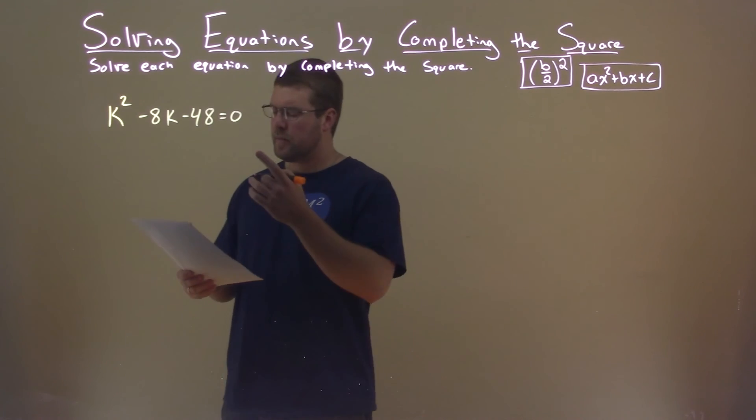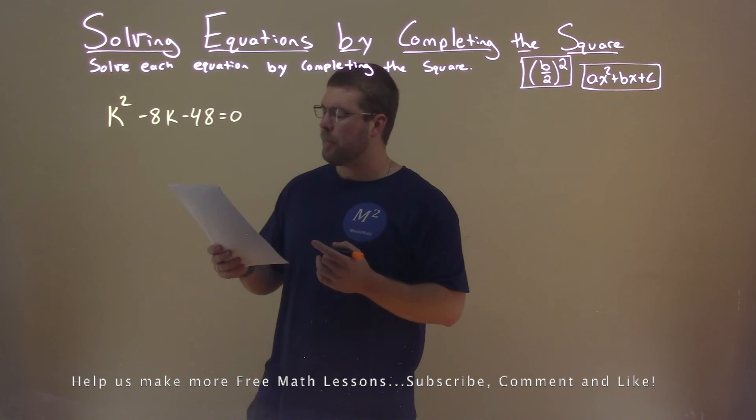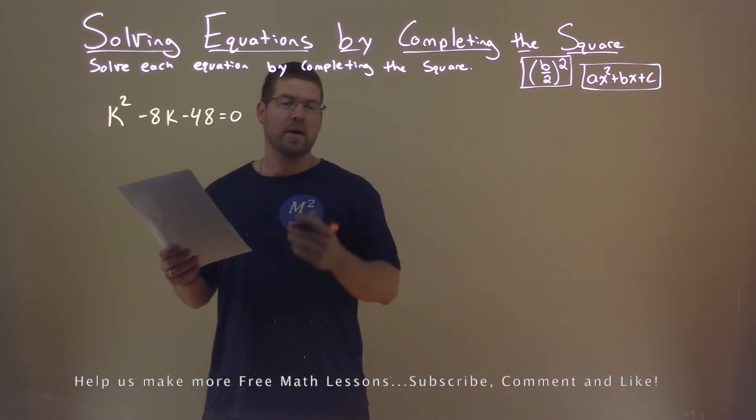We're given this problem right here: k² - 8k - 48 = 0, and we want to solve this by completing the square.